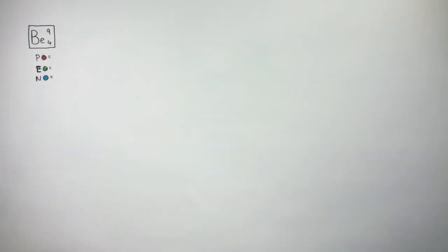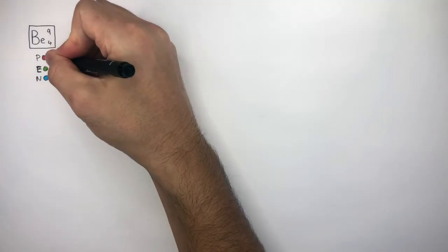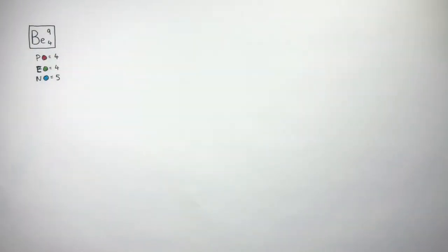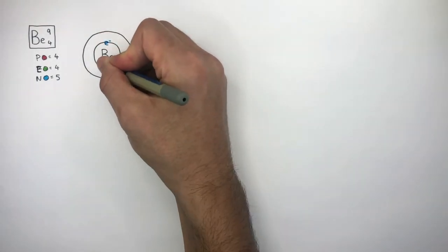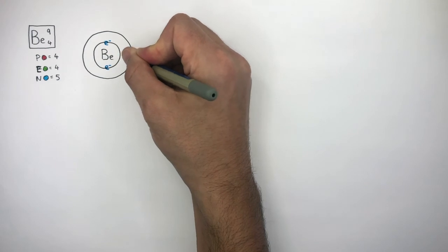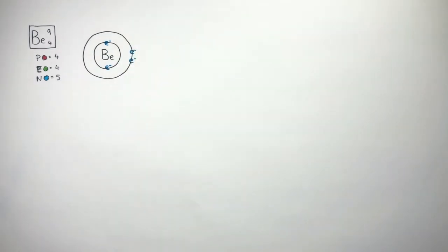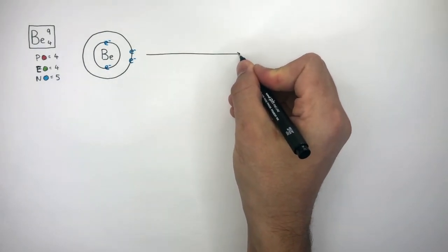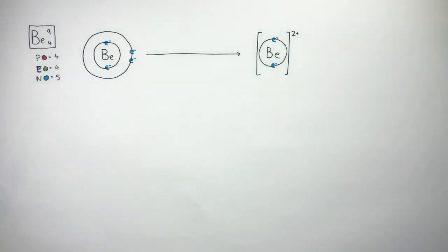Beryllium is a metal which has a mass number of nine and an atomic number of four. This means it has four protons, four electrons and five neutrons. Beryllium's electronic configuration shows it has two electrons in its first shell and two in its outer shell. Beryllium is in group two as it has two electrons in its outer shell. The beryllium atom is not stable as it does not have a full outer shell of electrons, so it loses two electrons to become a beryllium cation which has a charge of two plus.